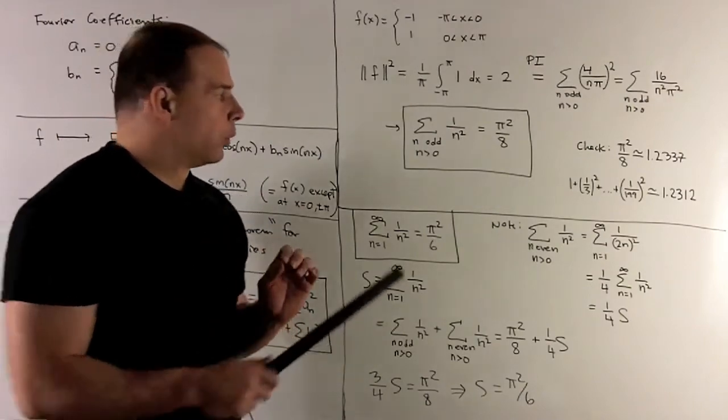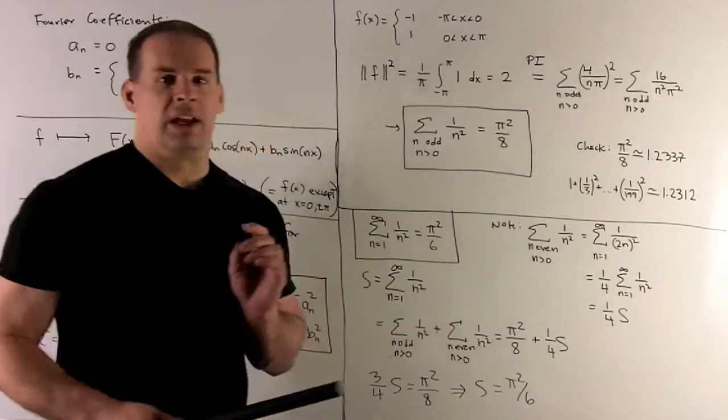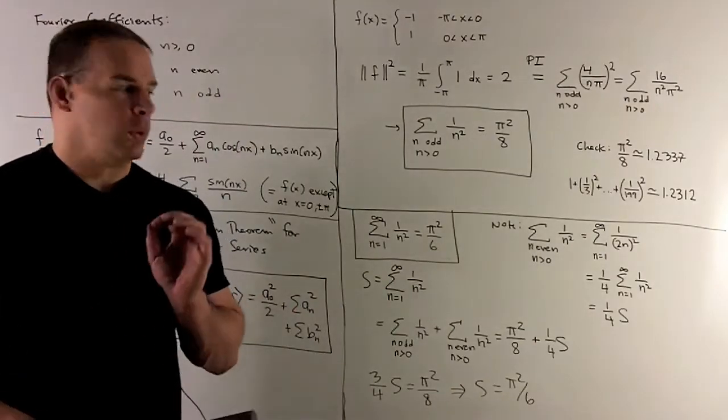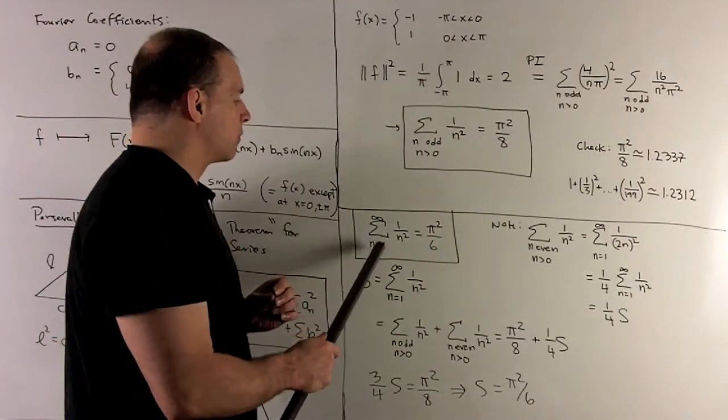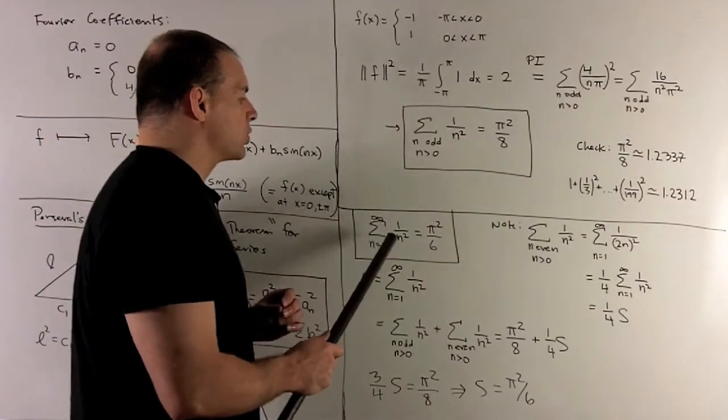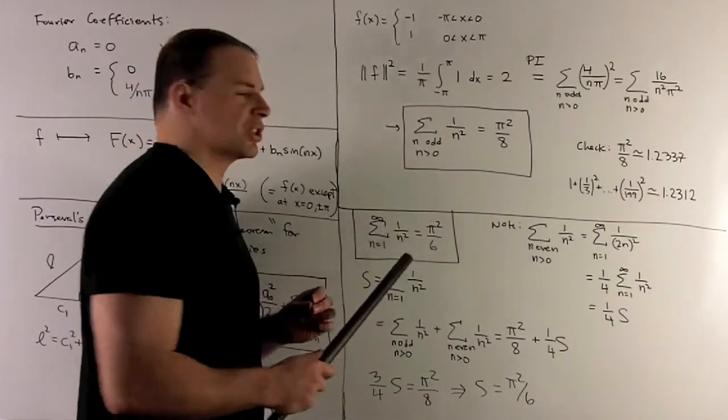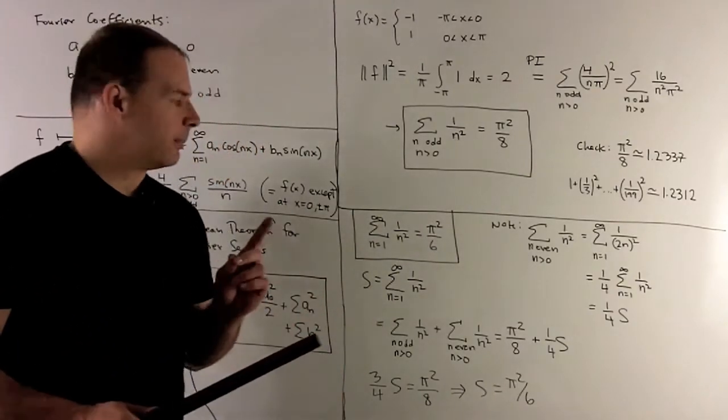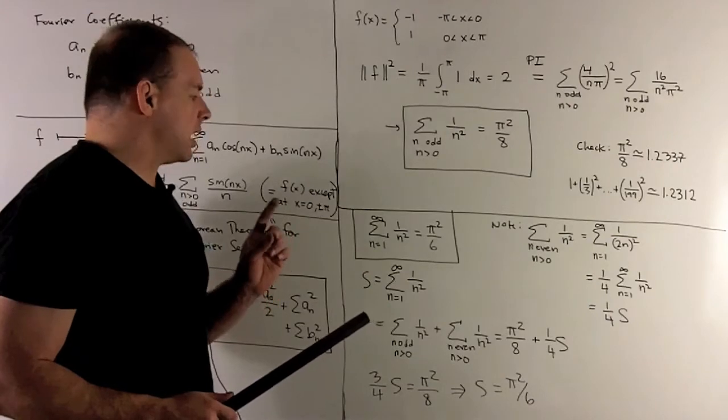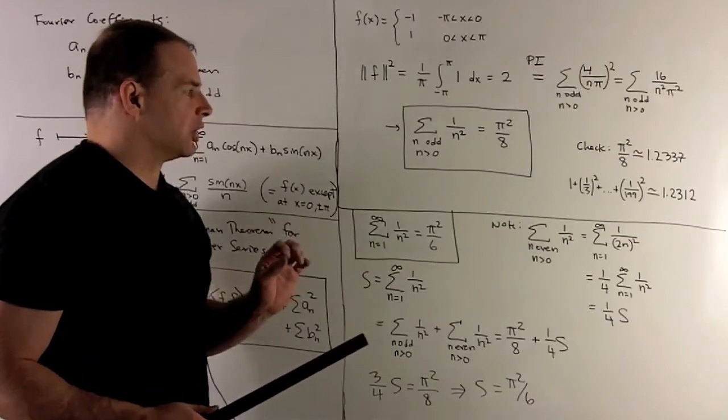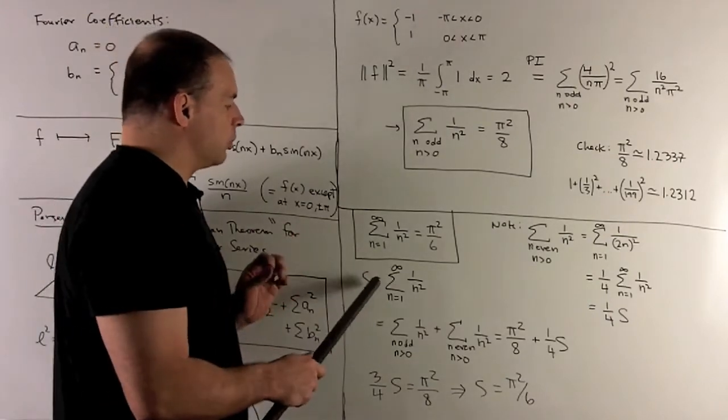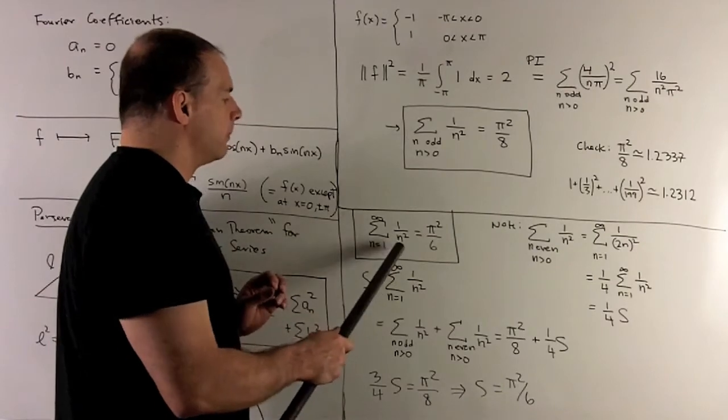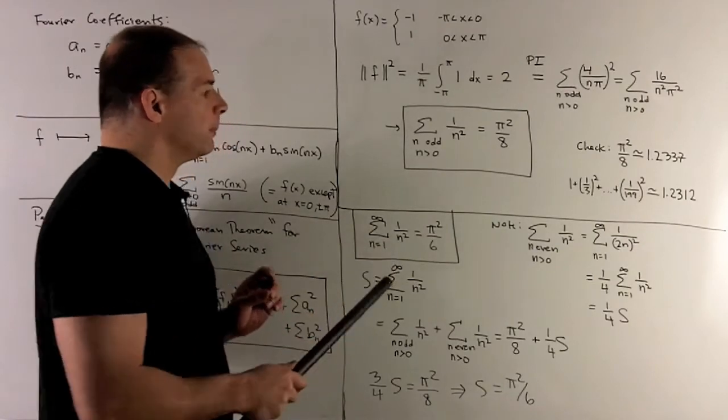Once we have this, we can get another result for free. We can get the sum, as n goes from 1 to infinity, of 1 over n squared equals pi squared over 6. Now, before we get to that, let's take a look at a little calculation. If I call s equal to the sum here, the series we want to evaluate.